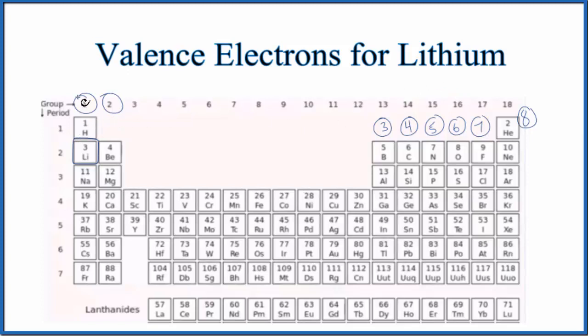You can look at the groups here. You can see the first group, group one, one valence electron. Group two, two. We skip the transition metals. Then group thirteen, which used to be called 3a, three valence electrons, all the way up to eight for the eighteenth group here on the periodic table, with the exception of helium that only has two valence electrons.